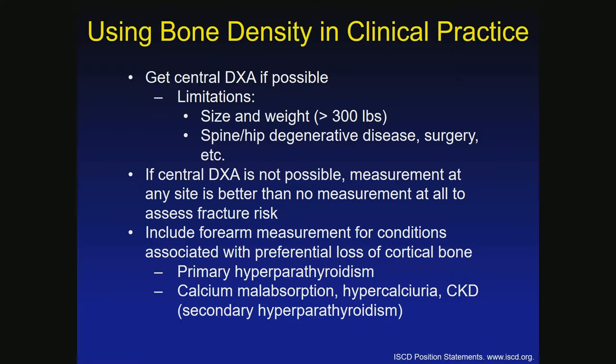When we screen or try to figure out if someone is at risk, we get a central DEXA. There are some limitations with table size, prior back surgery, or metal in the back. If central DEXA is not possible, a forearm bone density is better than nothing at all. Forearm bone densities are particularly good for primary hyperparathyroidism and for patients with calcium malabsorption, hypercalciuria, kidney disease, or secondary hyperparathyroidism.